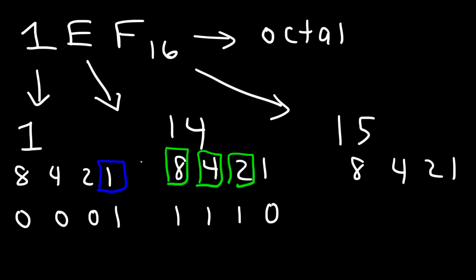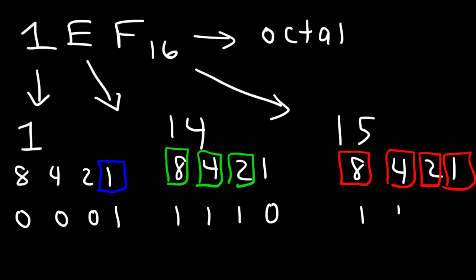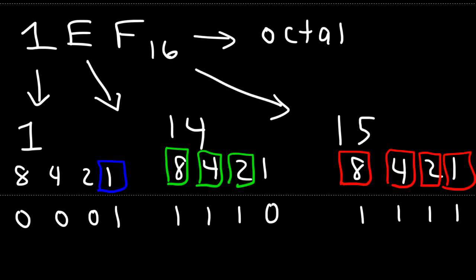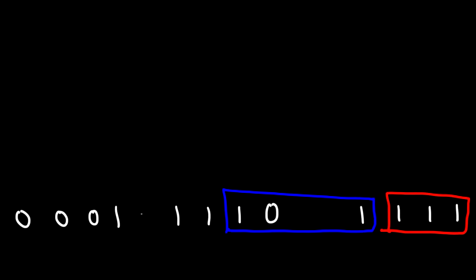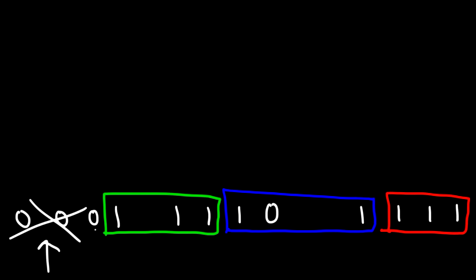Now our next step is to adjust the binary numbers from groups of 4 into groups of 3. Here's the first group of 3, the second group of 3, and the third group of 3. For the last group, notice we don't have any 1 — it's just 0 — so we don't need to use that. So the first group is 1, 1, 1; the second is 1, 0, 1; and then the last one is 1, 1, 1.